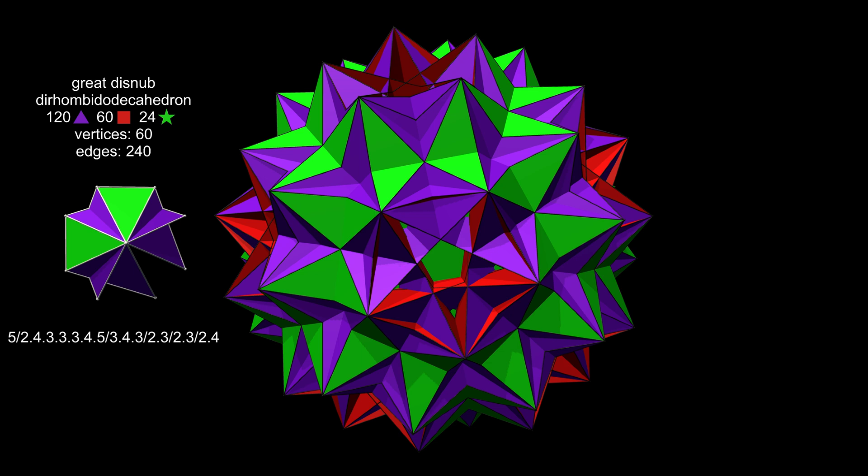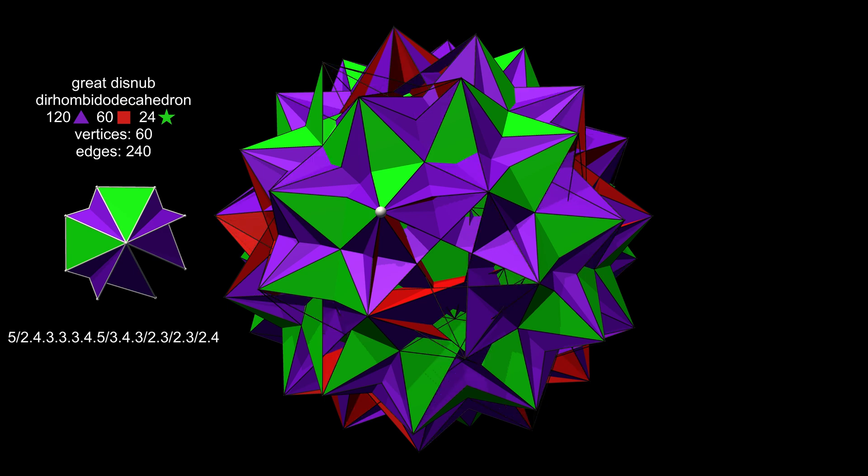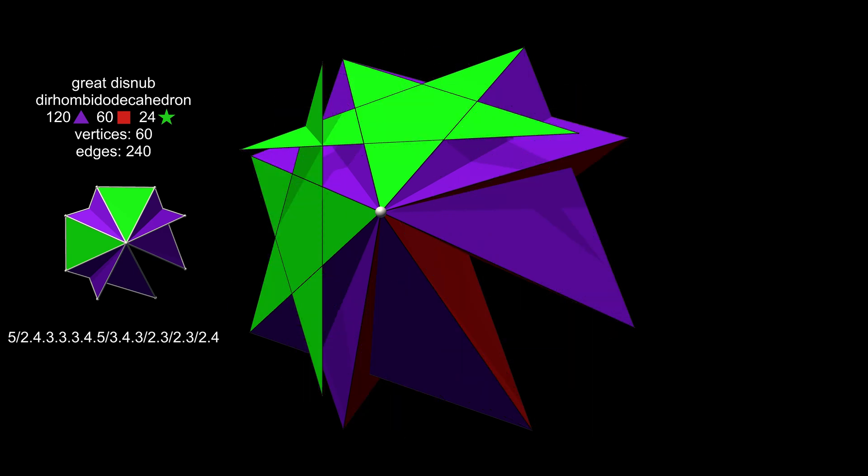Let's look at the faces around a single vertex to see what's going on. There are 12 faces surrounding this vertex: two green pentagrams, six purple triangles and four red squares.